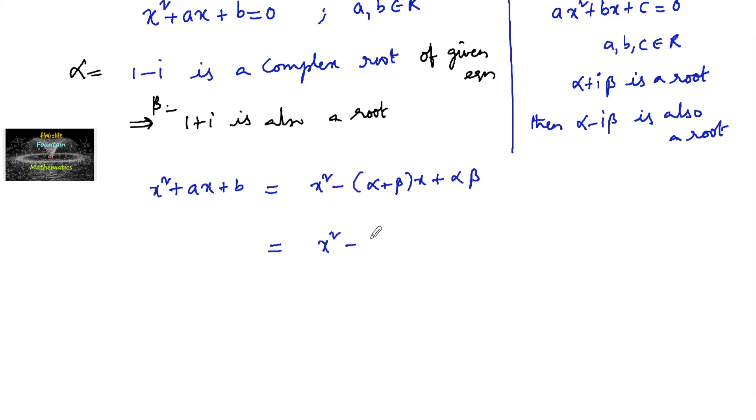So x square minus of 1 minus i plus 1 plus i of x plus 1 minus i into 1 plus i, which equals to x square minus 2x plus 1 minus i into 1 plus i is 1 plus 1, that's 2, since i square is minus 1.